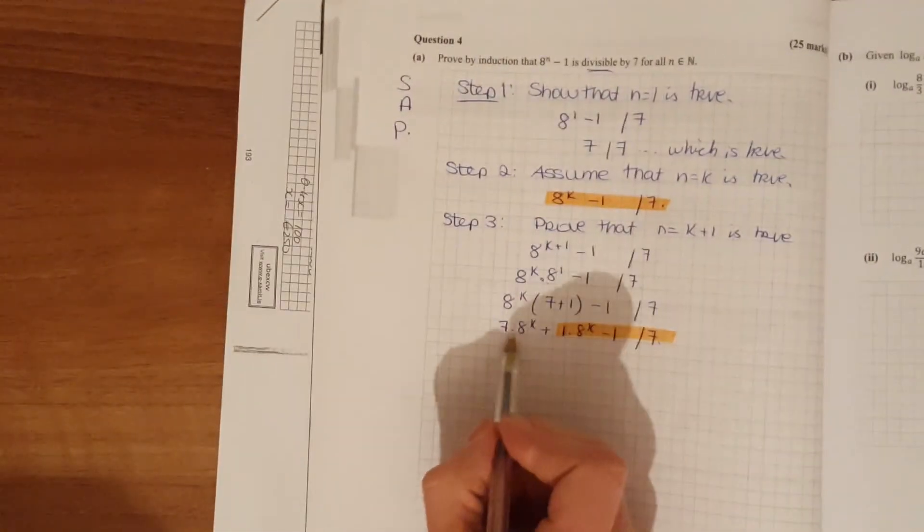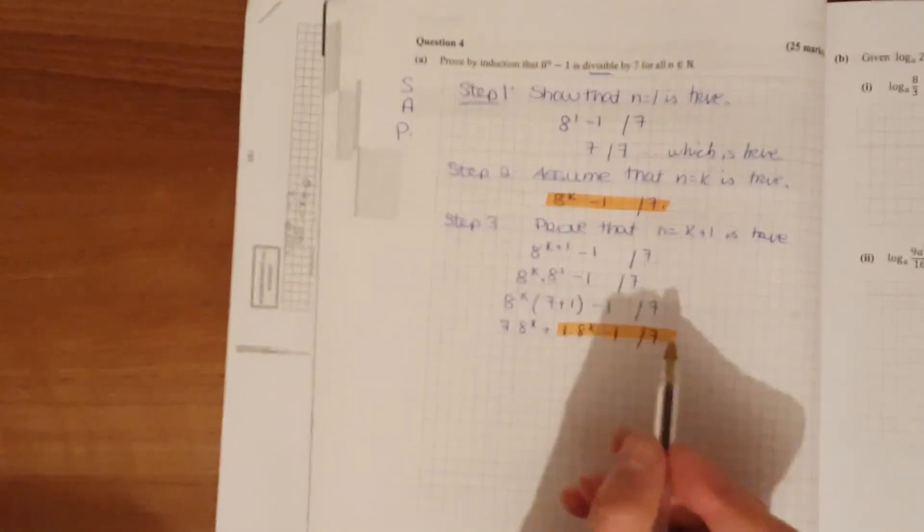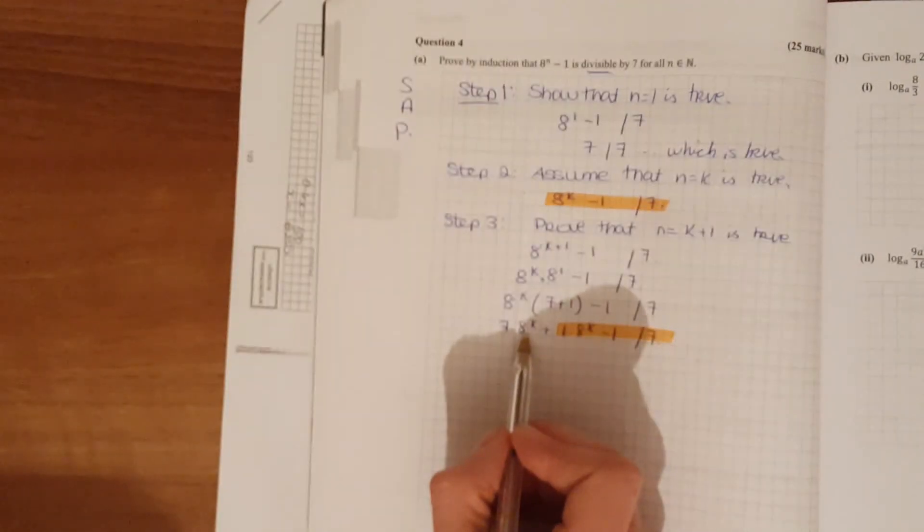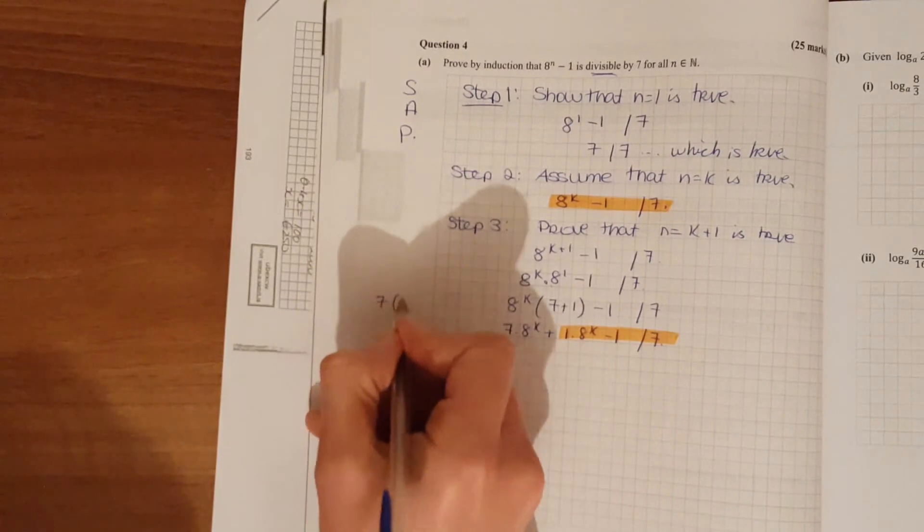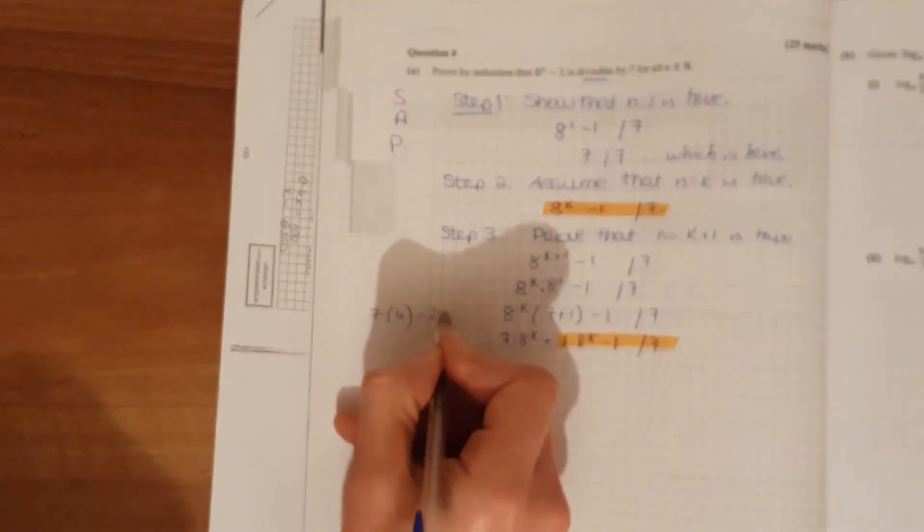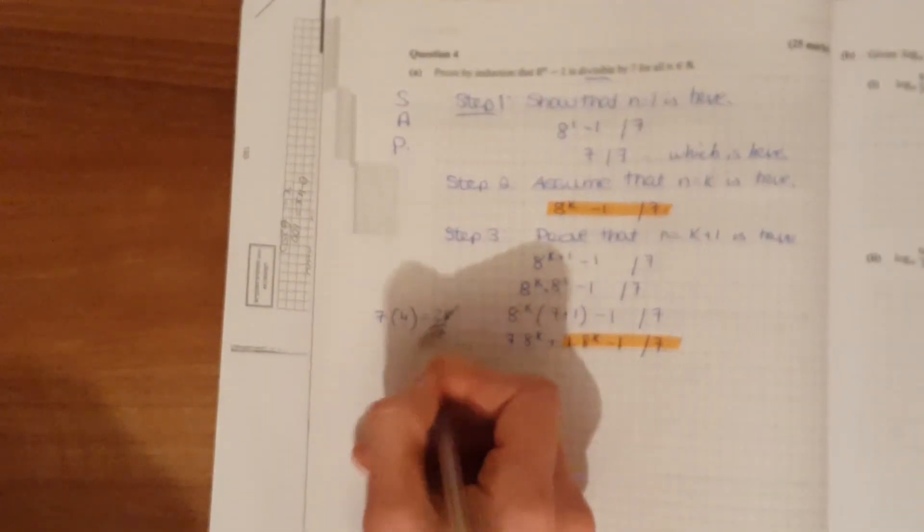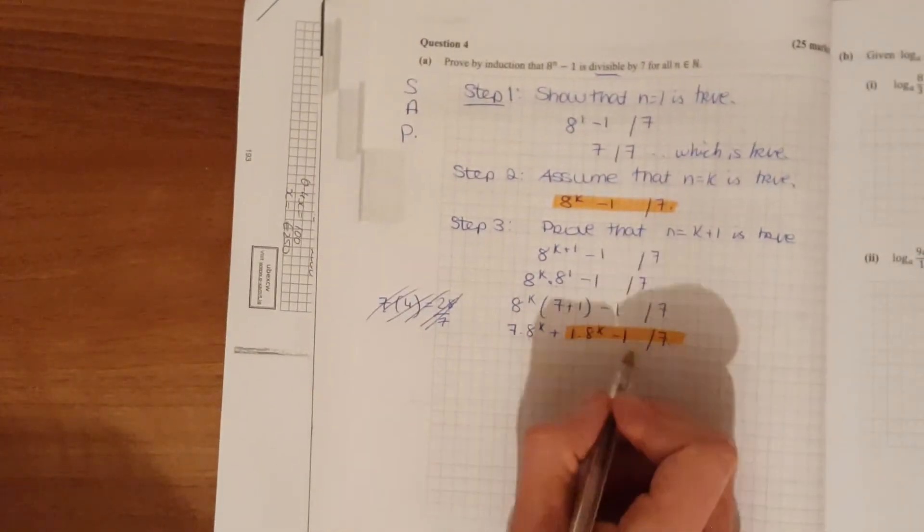Now from this, we can see that 7 times 8 to the k is divisible by 7. So let's say even if we have the number 4, 4 is not divisible by 7. But 7 times 4, which is 28, is divisible by 7. So any number multiplied by 7 will be divisible by 7. And that's it proven.